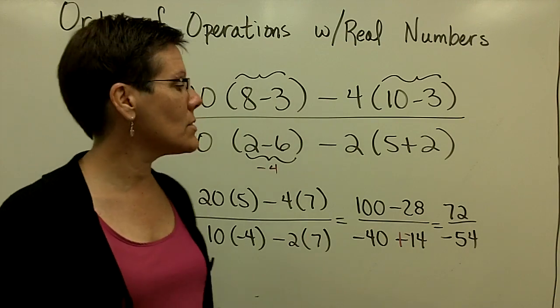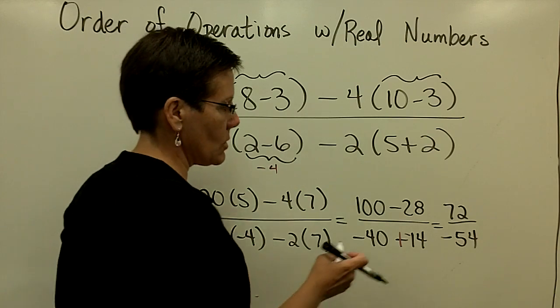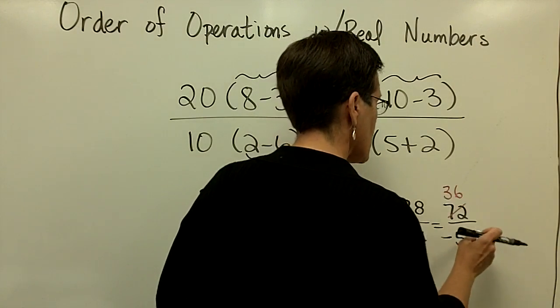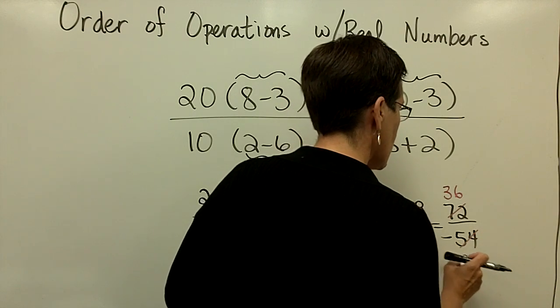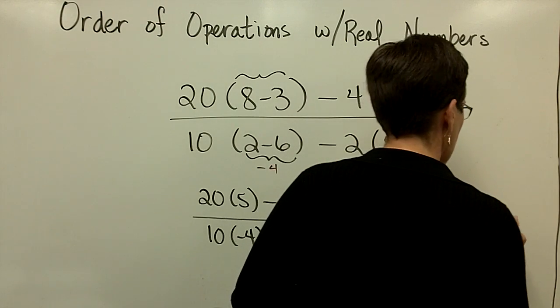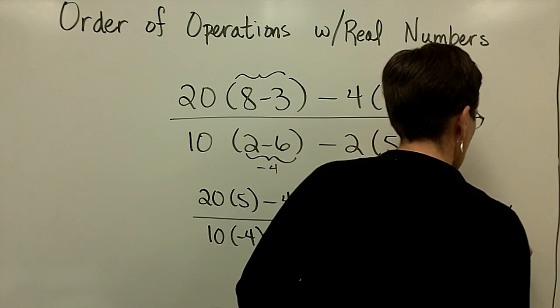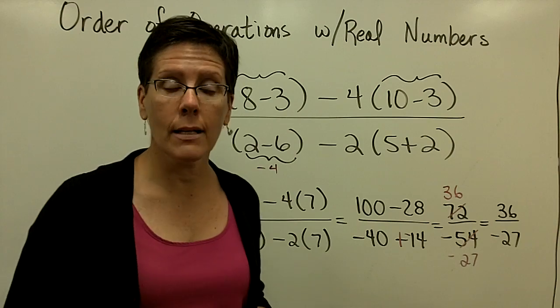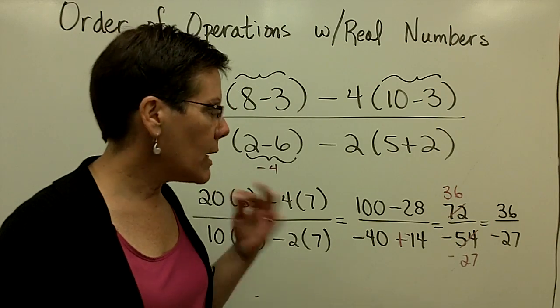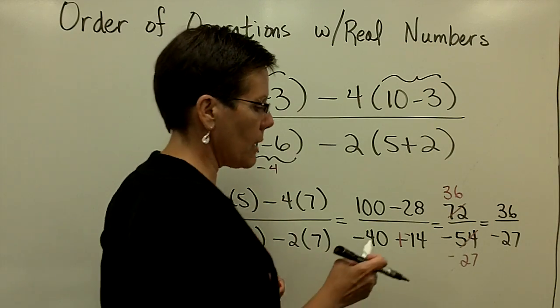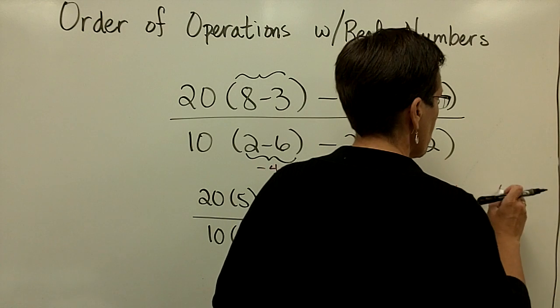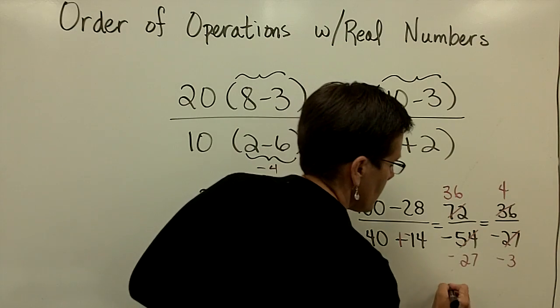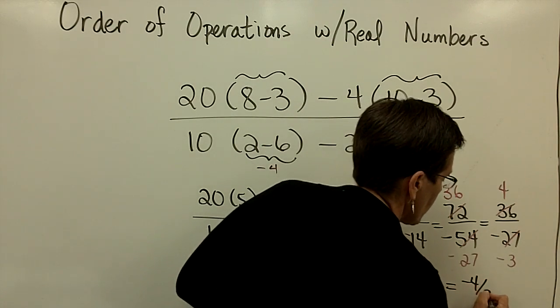So what I do is I just say to myself, let's just divide top and bottom by 2. So 2 goes into here 36 times, and 2 goes into here 27 times. I'm just going to write that down. 36 over a negative 27. And now I'm noticing that those are both divisible by 9. 9 is the biggest number. Might as well go for 9 rather than 3. And 9 goes into here 4 times, and 9 goes into here 3 times. So my final answer is a negative 4 over 3.